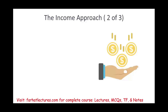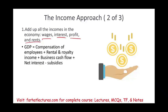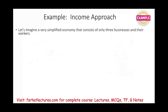Another way to measure GDP is from an income approach — simply adding up all the incomes in the economy: wages, interest, profit, rent. Think of it as measuring your economic health from your income. So GDP is computed by looking at compensation of employees (wages), rental and royalty income, business income, and net interest minus subsidies, because subsidies are given by the government. Let's take a look at the income approach with a simplified economy consisting of only three businesses and their workers.